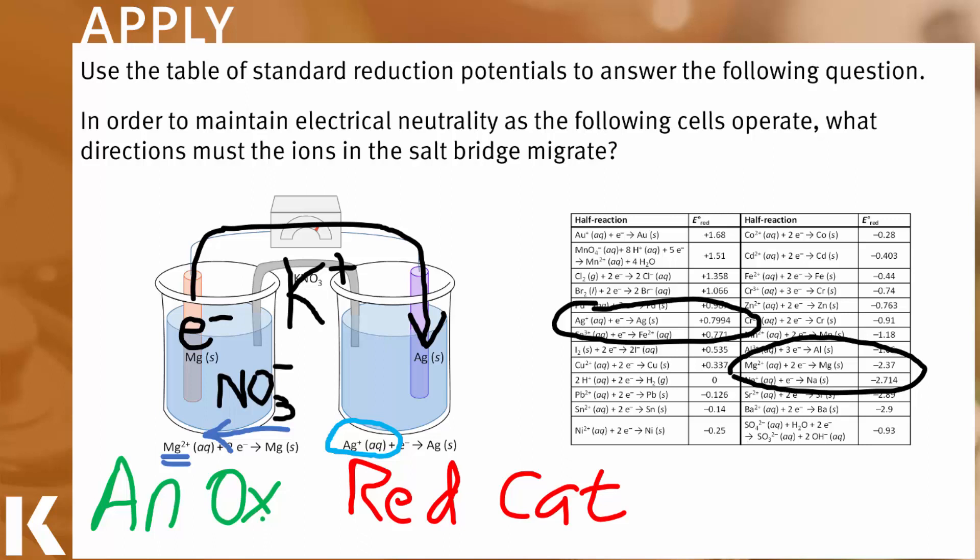So to balance that out electrically, positively charged potassium cations will migrate out of the salt bridge and into the silver half reaction, thereby neutralizing electrically the buildup of those positive charges.